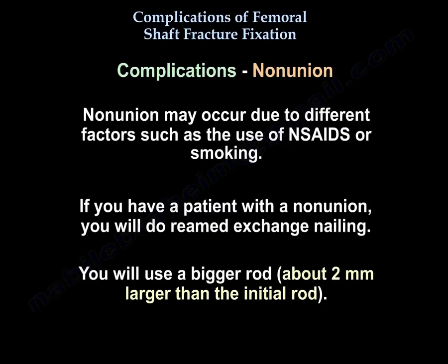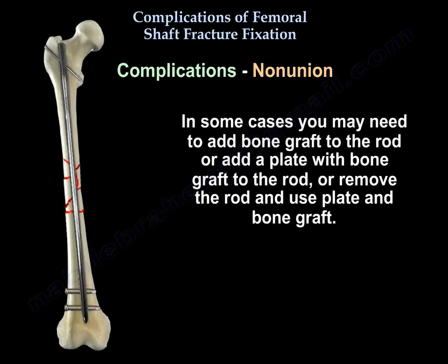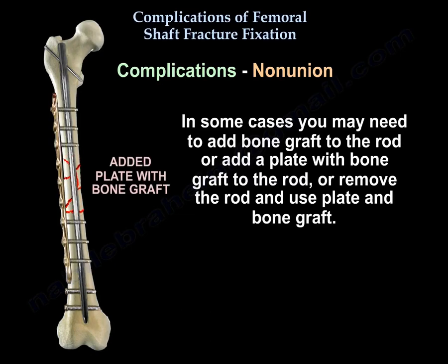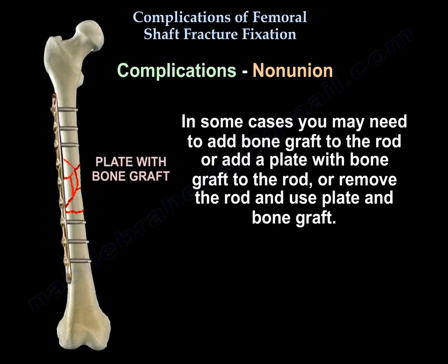Non-union may occur due to various factors, including the use of non-steroidal anti-inflammatory medications or smoking. If a patient presents with non-union, you will perform reamed exchange nailing using a rod approximately 2 mm larger than the initial rod. In some cases, you may need to add bone graft to the rod, add a plate with bone graft, or remove the rod entirely and use a plate with bone graft.